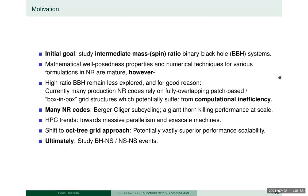The initial goal is to study intermediate mass ratio or spin ratio binary black hole (BBH) systems. Mathematical well-posedness properties and numerical techniques in numerical relativity are quite mature, but the high mass ratio BBH part of the vacuum theory is a bit less explored, and there is good reason for this.